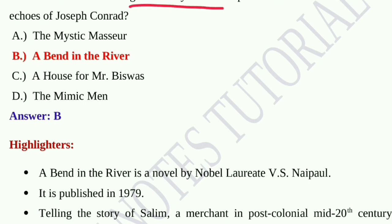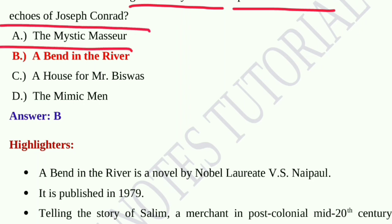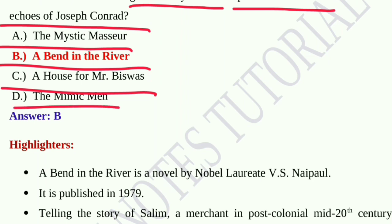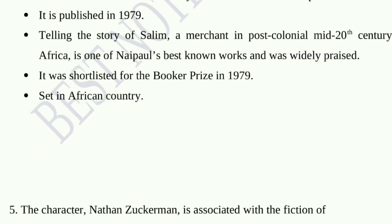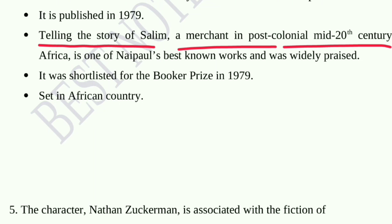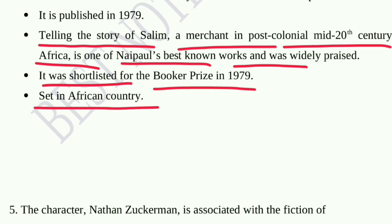Question number four: Which of the following novels by V.S. Naipaul is set in Africa and carries echoes of Joseph Conrad? Option A, The Mystic Masseur; option B, A Bend in the River; option C, A House for Mr. Biswas; option D, The Mimic Men. Option B, A Bend in the River, is the correct answer. It is a novel by Nobel laureate V.S. Naipaul published in 1979, telling the story of Salim, a merchant in post-colonial mid-20th century Africa. It was shortlisted for the Booker Prize in 1979.